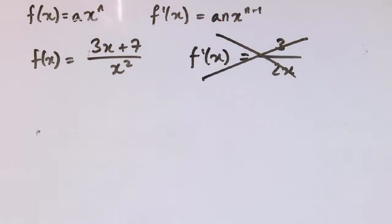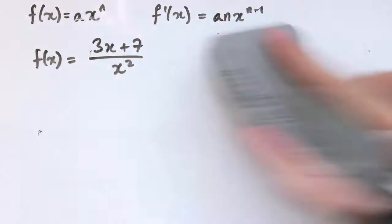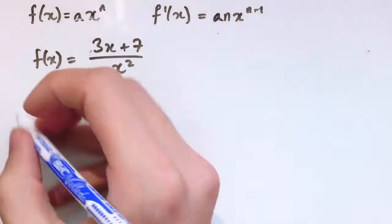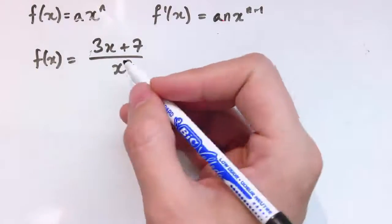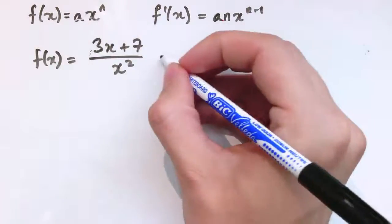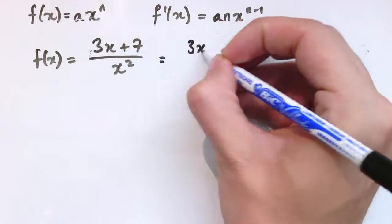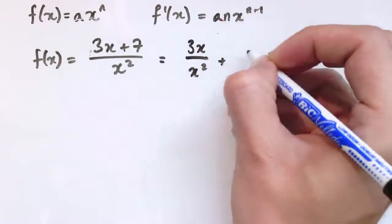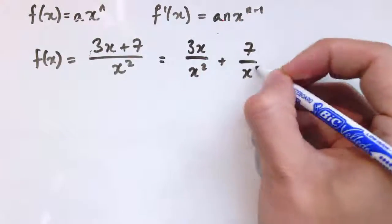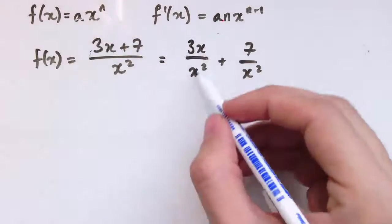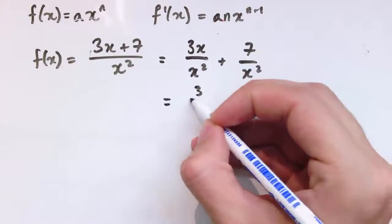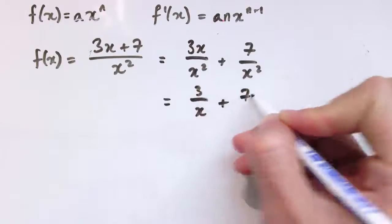So how can we deal with these ones without needing that? Well, something like this, because it's just a single term with x or x squared or x cubed or something like that on the bottom, we can just split this fraction up. So this is the same as 3x over x squared plus 7 over x squared, by what you know about algebraic fractions, and then we could cancel a factor of x in this fraction and get 3 over x plus 7 over x squared.